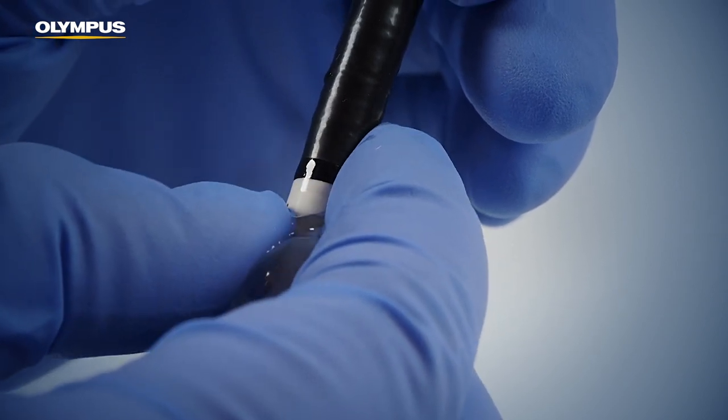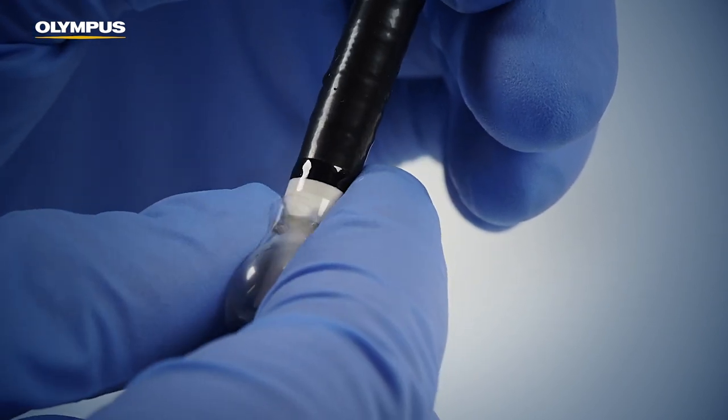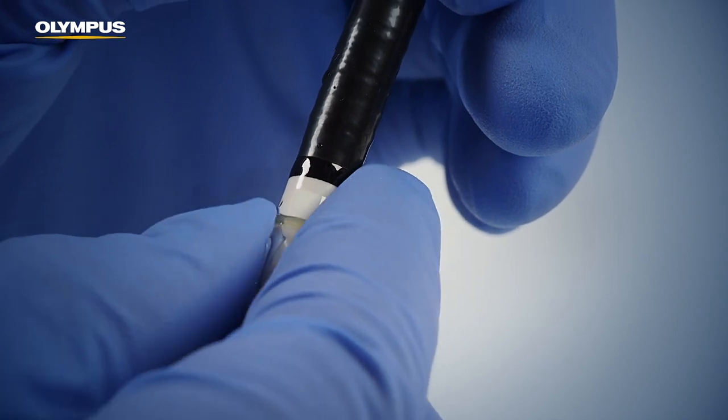Hold the rigid distal tip of the endoscope with one hand while slightly lifting the rear balloon band with the thumb of the other hand.